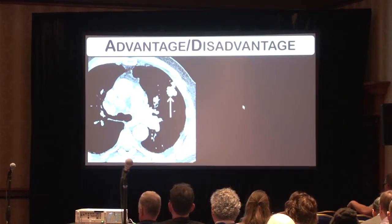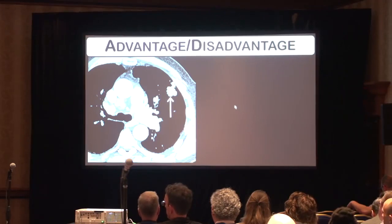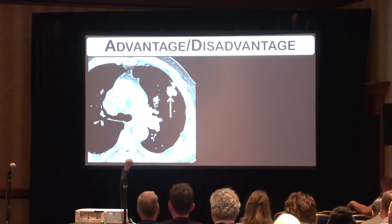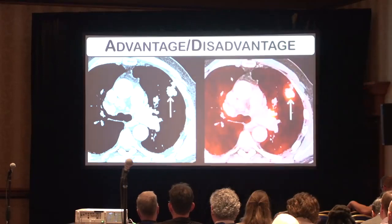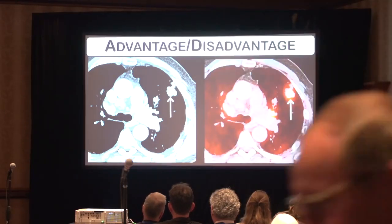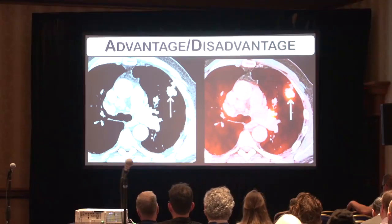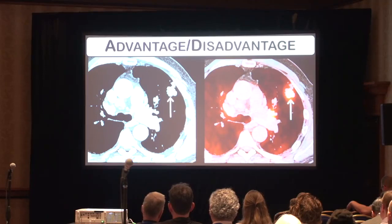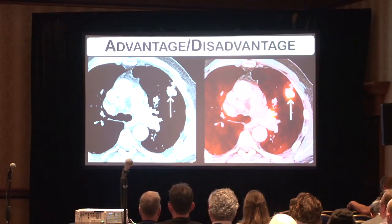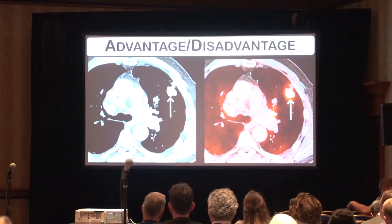We're often asked whether PET can replace invasive sampling for lymph nodes, and the answer is not quite yet. Here we can see a patient with a left upper lobe lung cancer that's very avid on PET. In the mediastinum, we have a lymph node that is enlarged but not very avid on PET — similar to the blood pool. But there is a new FDG-avid focus in the left hilar region. The enlarged lymph node that was negative on PET was biopsied and was actually positive, while the lymph node not seen on CT was positive on PET — illustrating the pros and cons of PET.